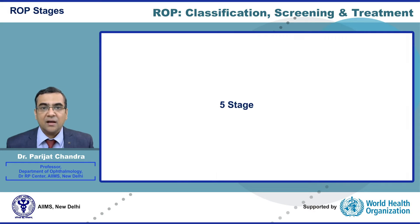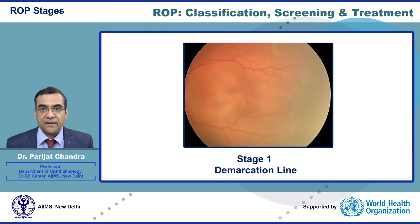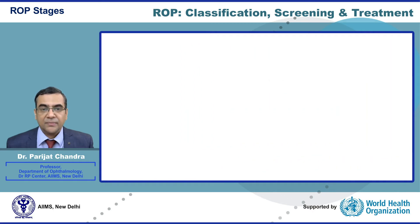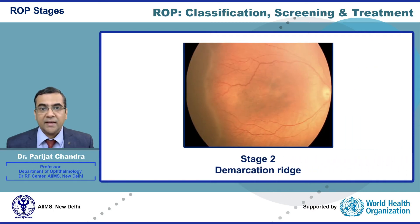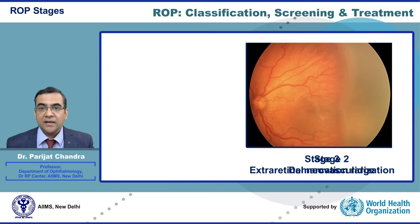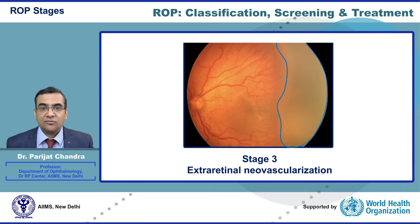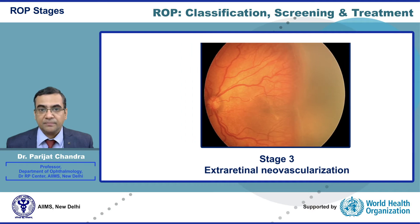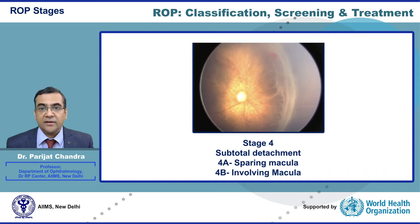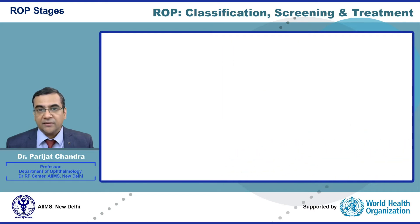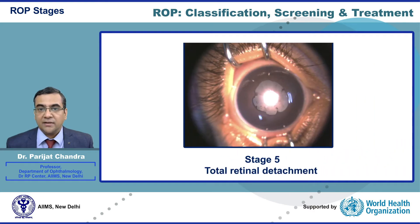There are five stages of ROP. Stage 1 is a demarcation line between the vascular and avascular retina. In stage 2, the line gains height and width and becomes a demarcation ridge. In stage 3, there is extra-retinal neovascularization. In stage 4, there is subtotal retinal detachment, with 4a sparing the macula and 4b involving the macula. In stage 5, there is total retinal detachment.